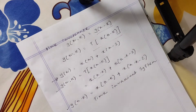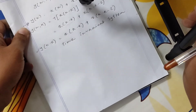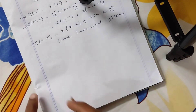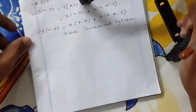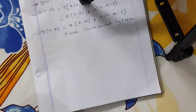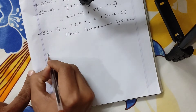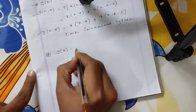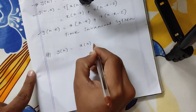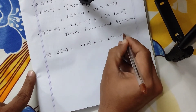Let's see another example. This is the second problem. y[n] equal x[n] plus n into x[n-3].